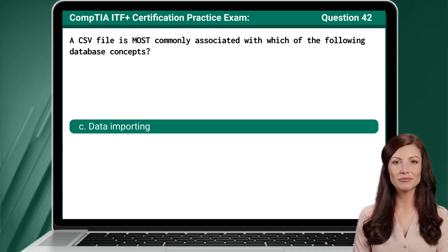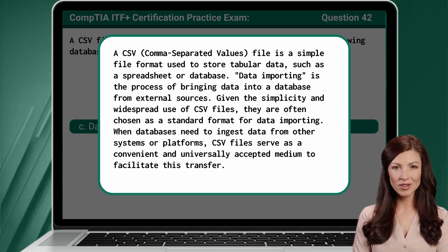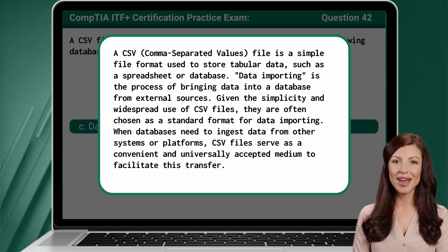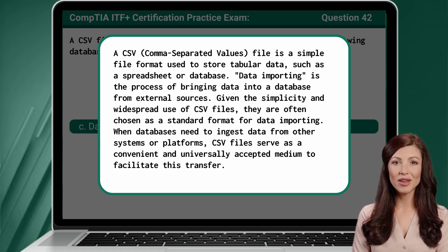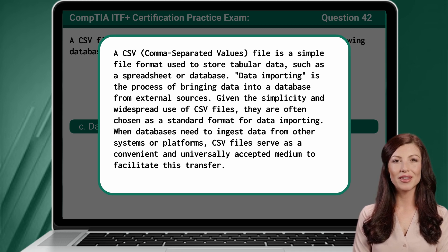The answer is C, Data Importing. A CSV, or Comma Separated Values file, is a simple file format used to store tabular data, such as a spreadsheet or database. Data Importing is the process of bringing data into a database from external sources. Given the simplicity and widespread use of CSV files, they are often chosen as a standard format for data importing. When databases need to ingest data from other systems or platforms, CSV files serve as a convenient and universally accepted medium to facilitate this transfer.